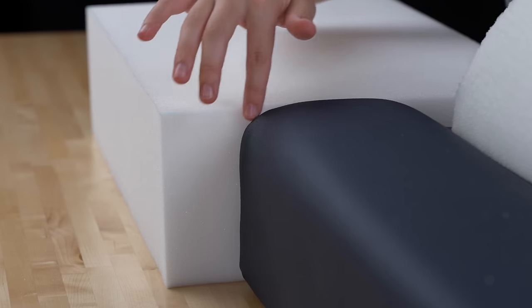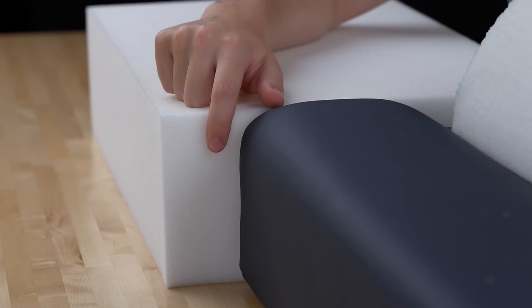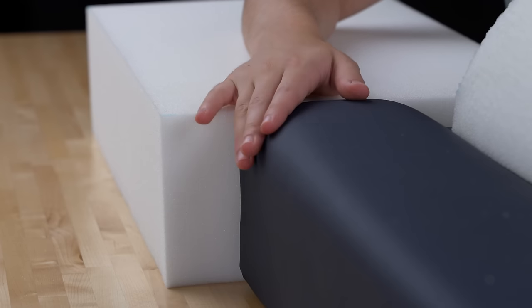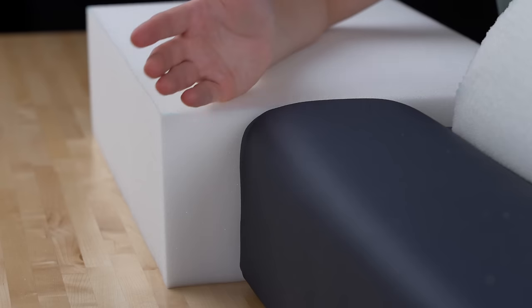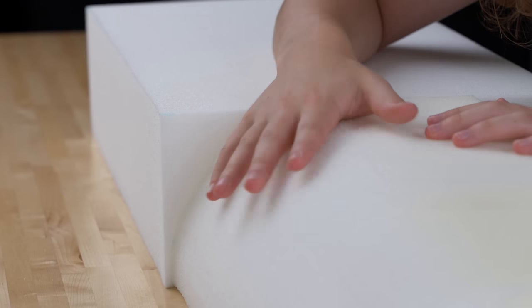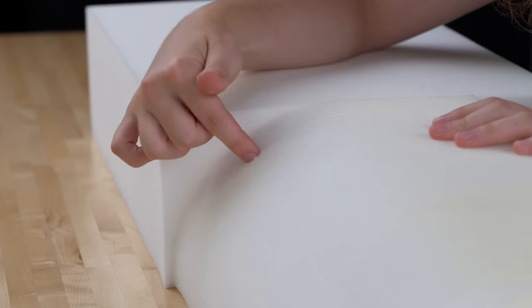To start, you're going to need to mark the shape that you want on the ends of your foam. You can either do this with the foam that you're replacing as a guide, or you can create your own shape. We've gone ahead and created the shape that we want our foam to be, so we're going to use this as our reference.